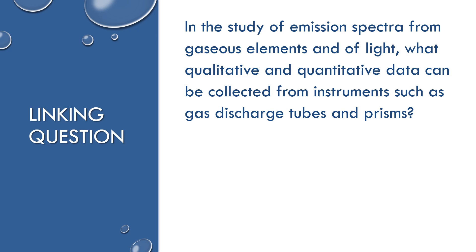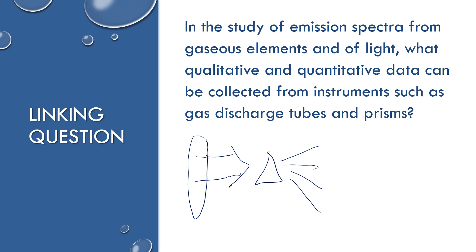These are linking questions that connect to other sections. Emission spectra from gaseous elements: what qualitative and quantitative data can be collected from instruments such as gas discharge tubes and prisms? If the gas is trapped in the tube and you pass electricity through it, it will emit light with a distinct color we can use to identify the element. We can also pass that light through a prism to separate it into distinct wavelengths. We can figure out qualitatively which element is contained, and we can also measure the specific wavelengths quantitatively to figure out what electronic transitions are happening in that discharge tube.